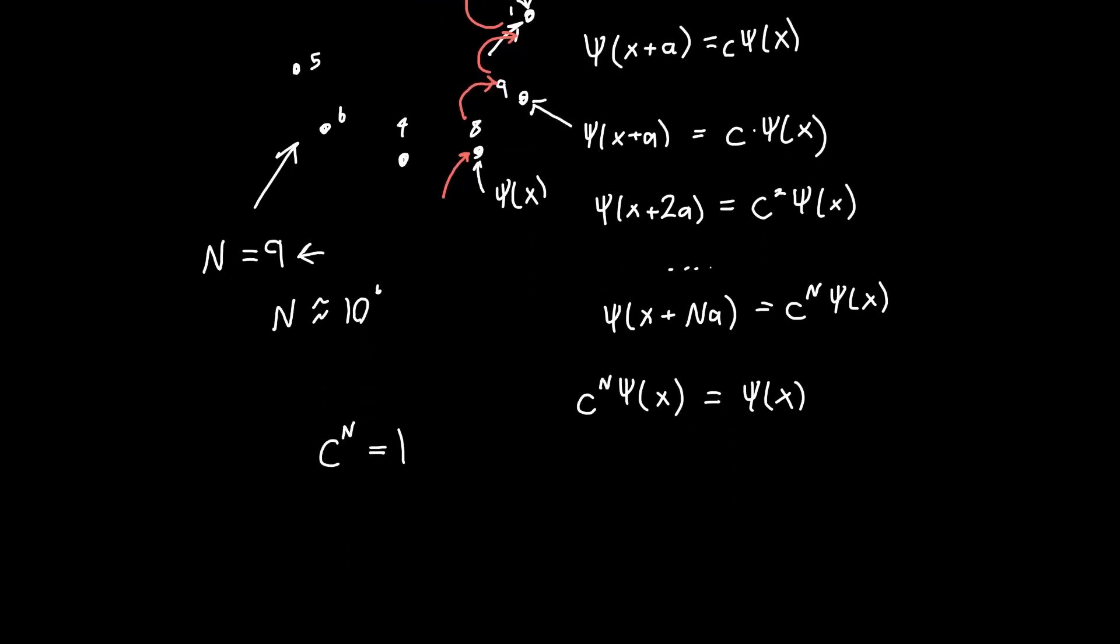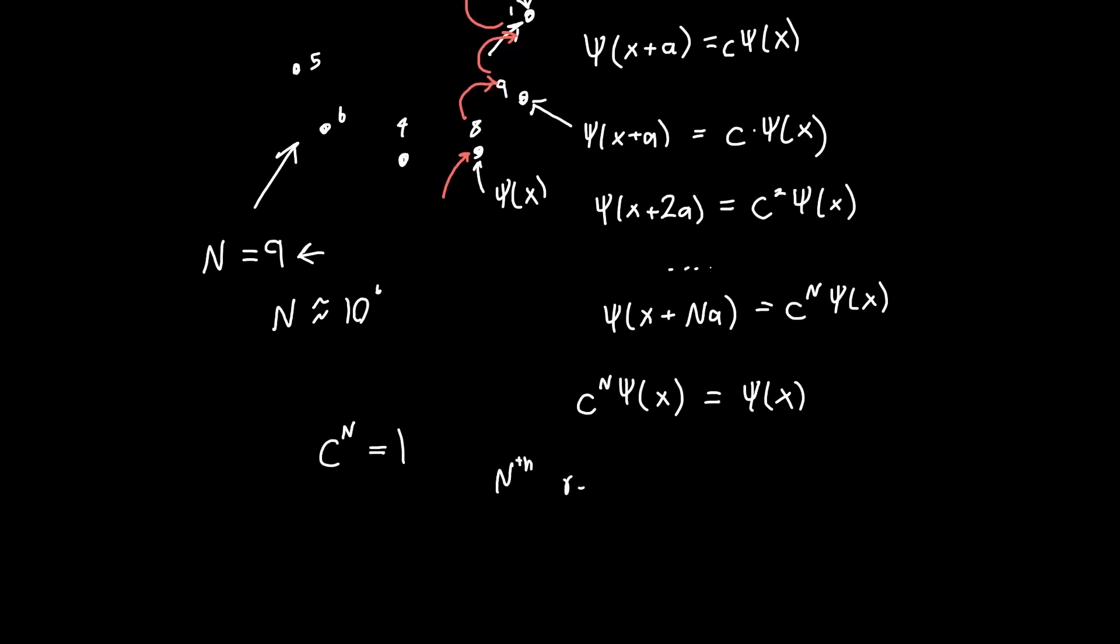And so in general, c to the n has to equal one. Or c has to be what's called an nth root of unity, which is just the wordy way of saying this. So c has to be some nth root of one. And all of the nth roots of one can be just represented as e to the i two pi times some integer s divided by n. So these are all where s can be equal to zero, one, two, all the way up to n.